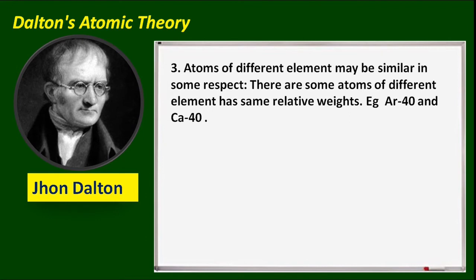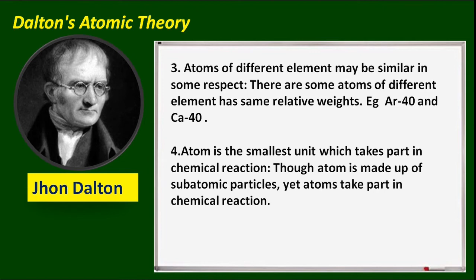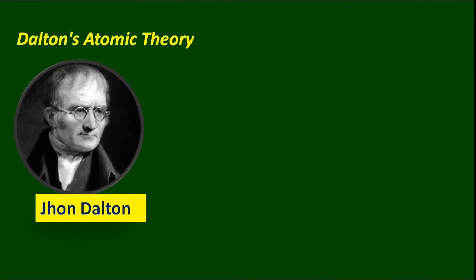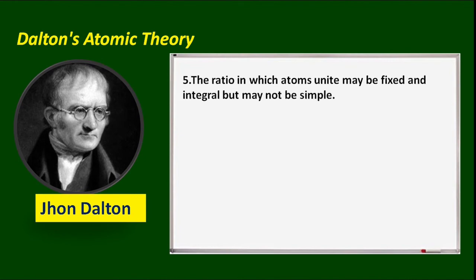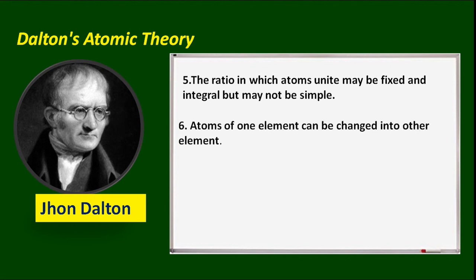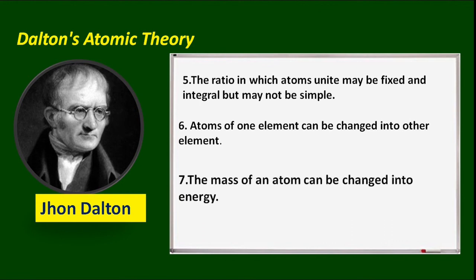Atoms of different elements may have the same relative weight — for example, argon-40 and calcium-40. Atom is the smallest unit that takes part in a chemical reaction, though it is made up of subatomic particles. The ratio in which atoms unite may be fixed and integral but may not always be simple. Atoms of one element can be changed into another element, and the mass of an atom can be converted into energy.